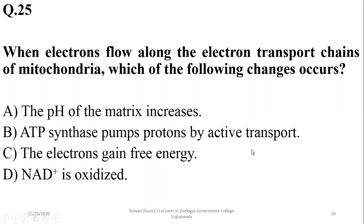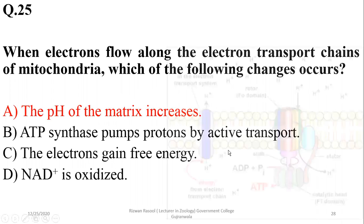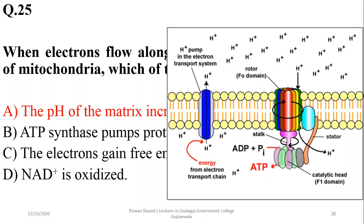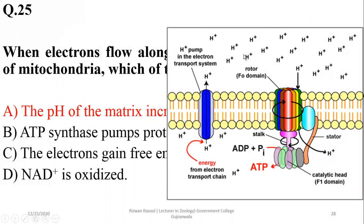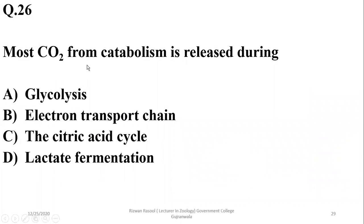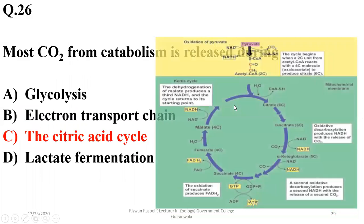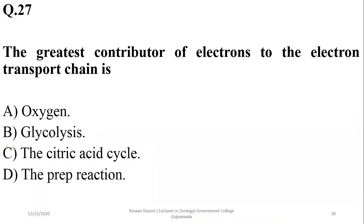When electrons flow along the electron transport chains of mitochondria, the pH of the matrix increases, because hydrogen ions are pumped from the matrix to the intermembrane space — the lumen of the cristae in the case of mitochondria, or the lumen of the thylakoid in the case of chloroplasts. The matrix loses hydrogen ions, so pH increases. Most CO2 for catabolism is released during the citric acid cycle, and the Krebs cycle is the greatest contributor of electrons to the electron transport chain.